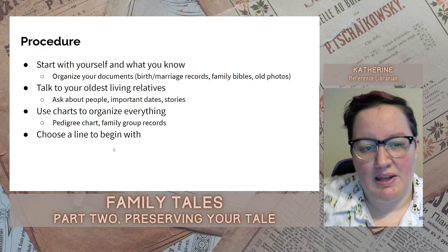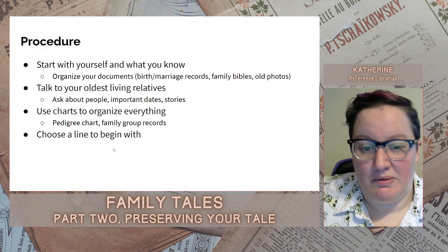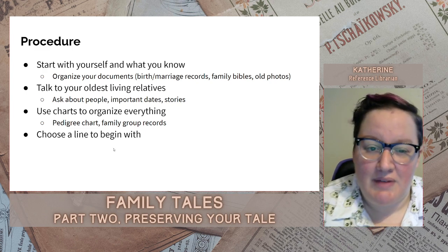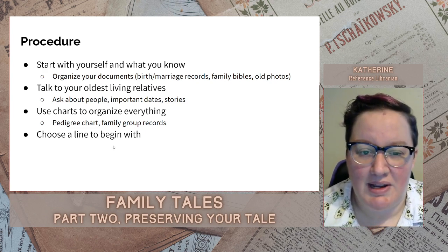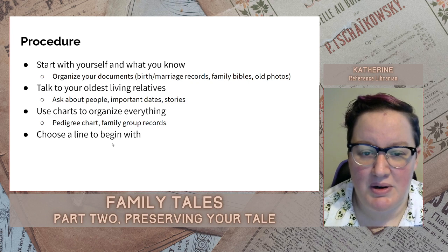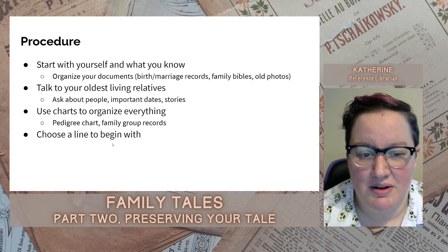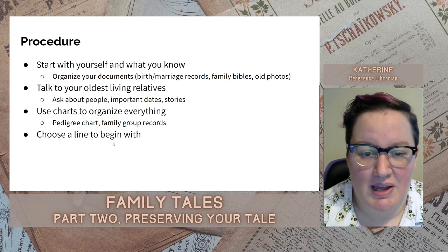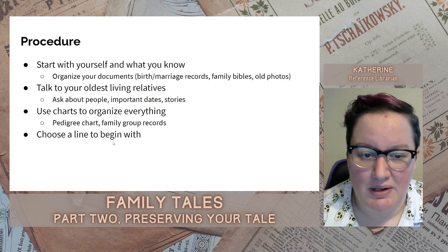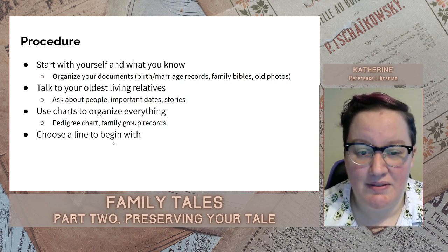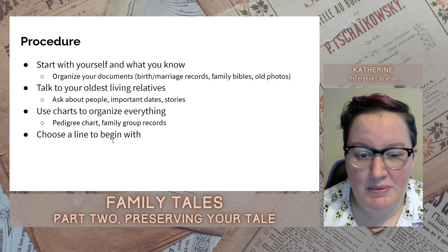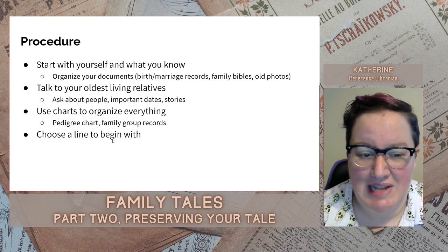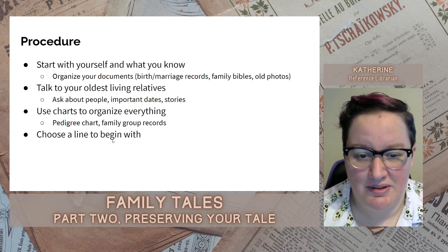The most important thing is to start with you. Write down everything you know about your family and organize all the documents that you have, like birth and marriage records, old family records like family bibles, and old photos that you have. Then you can talk to your oldest living relatives to fill in gaps, ask about people and important dates, and ask for their stories.